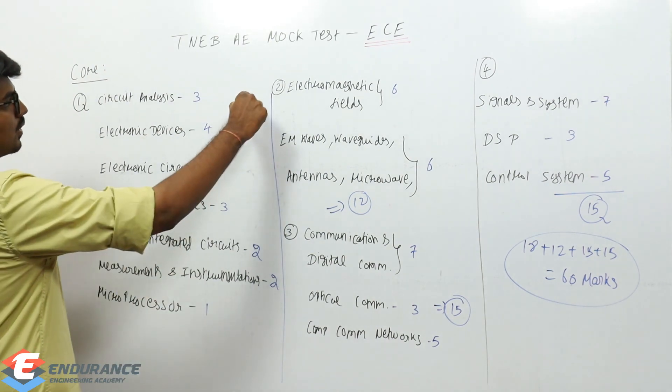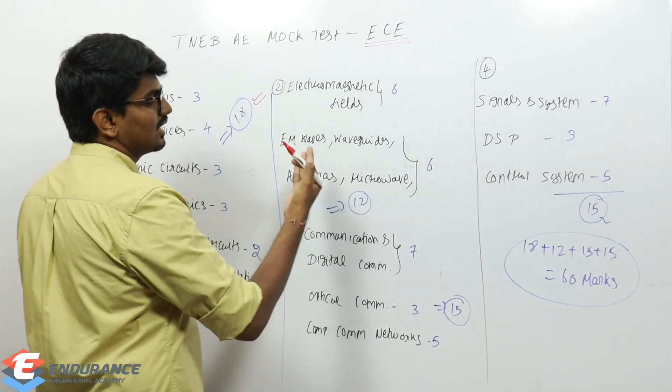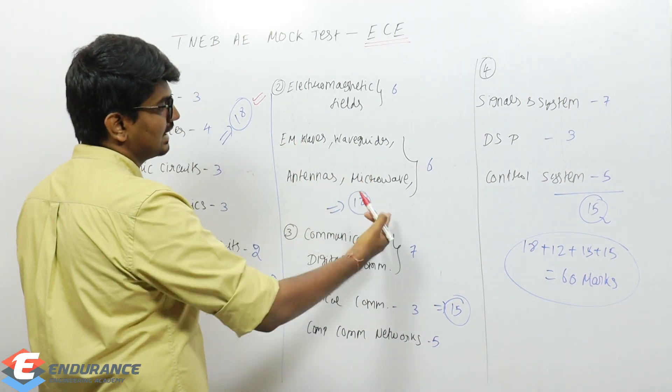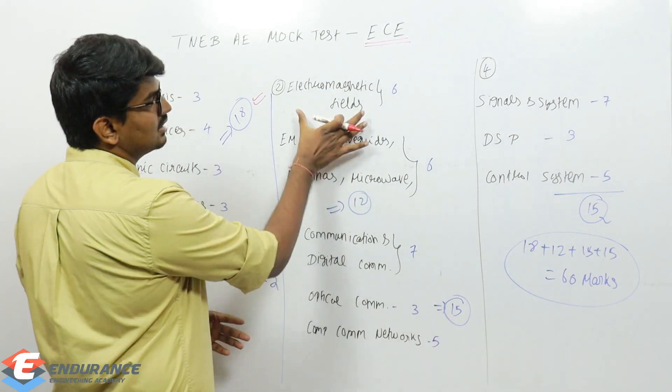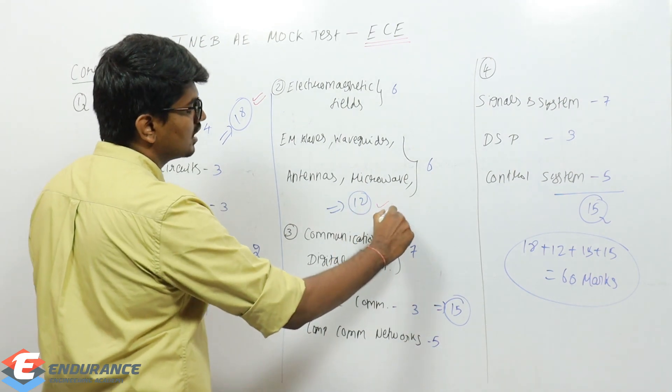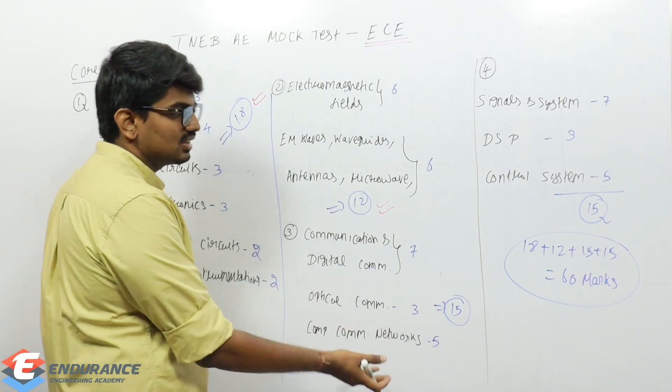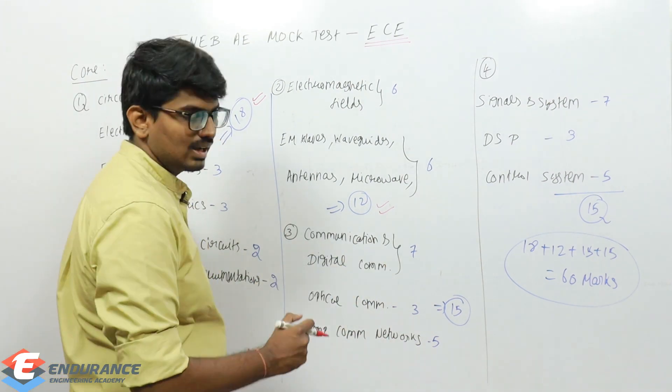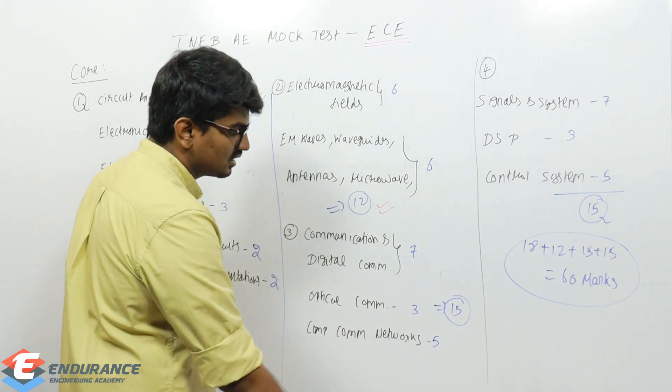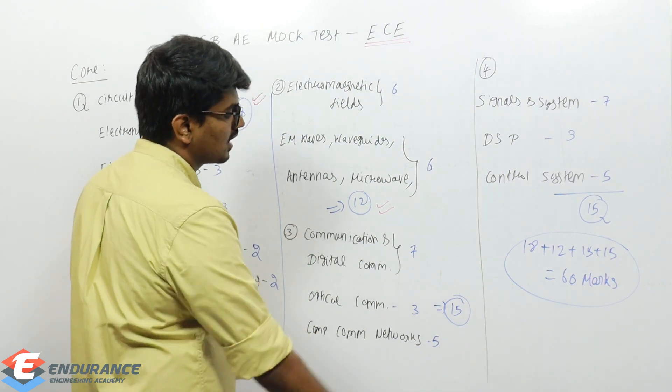Going to second section: electromagnetic fields and electromagnetic waves, waveguides and antennas, and microwaves - six marks each, so overall 12 marks. Coming to third section: communication and digital communication combinedly around seven marks, optical communication is three marks, and computer communication networks is five marks - overall 15 marks.